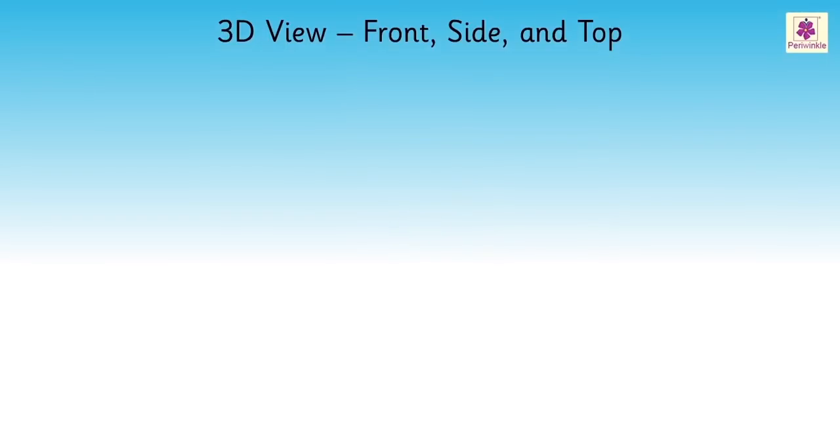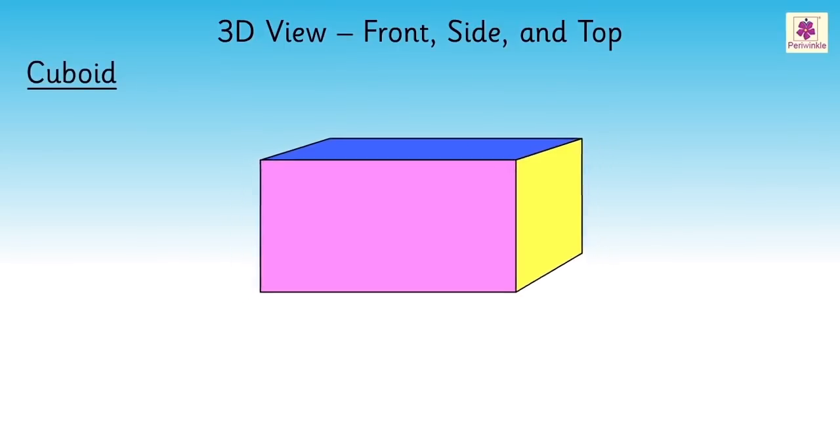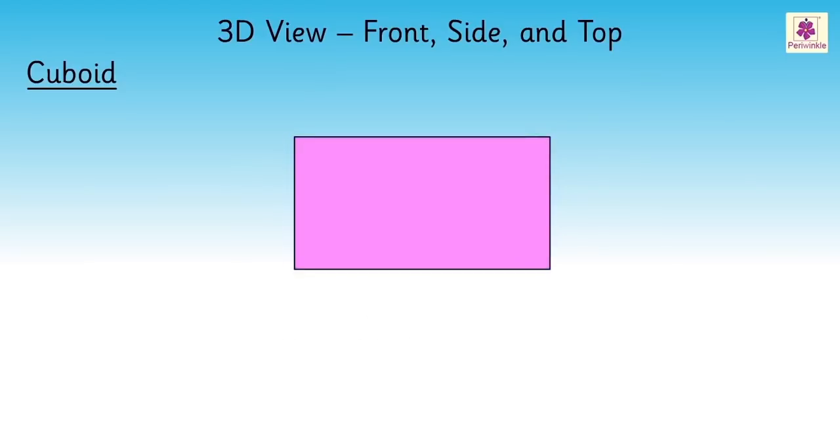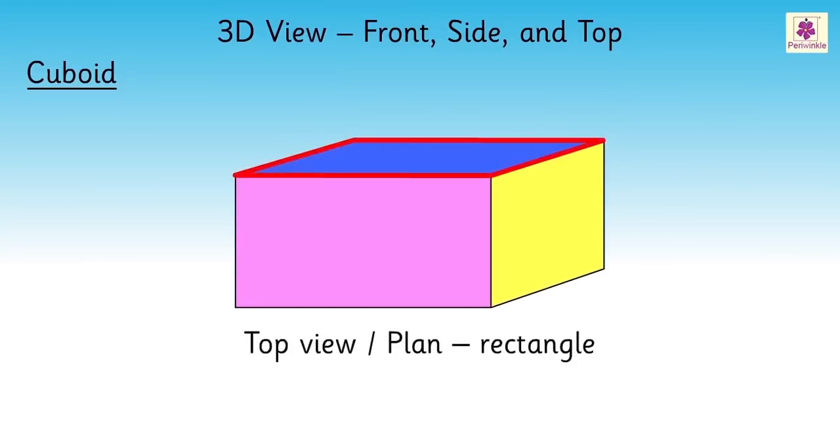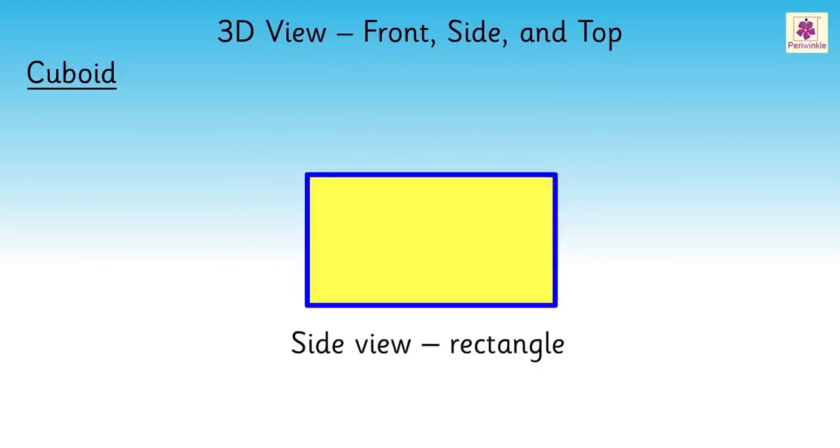Now, let us look at the 3D view of a cuboid. Here, the pink face is its front view, also called as the plan. And the yellow face is its side view.